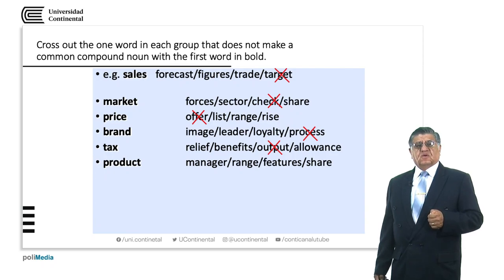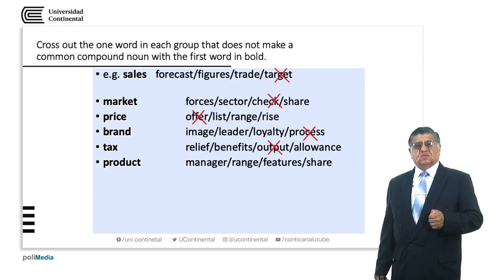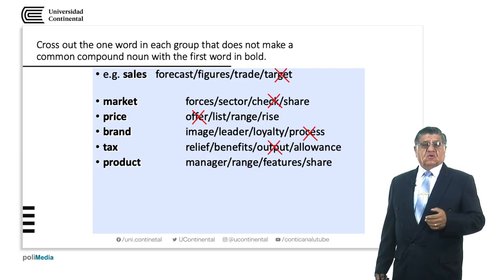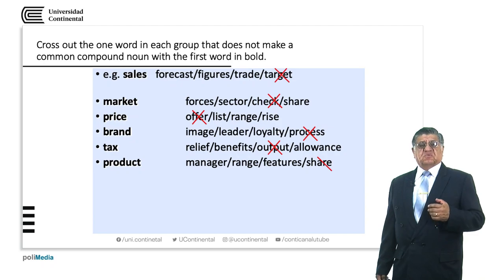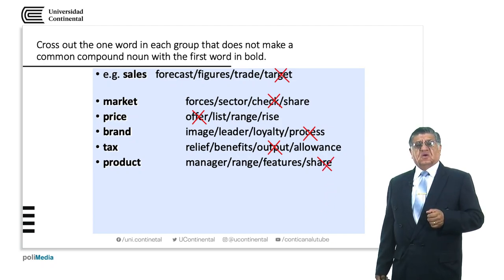Product: 'product manager', 'product range', 'product features' are valid. 'Product share' is not a good compound word.